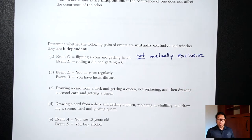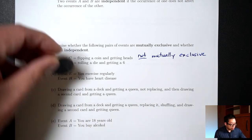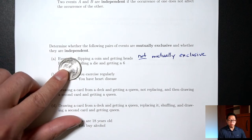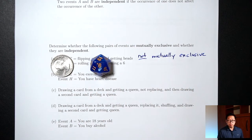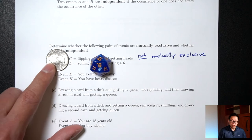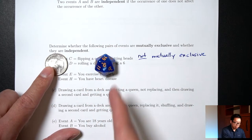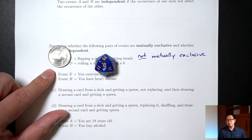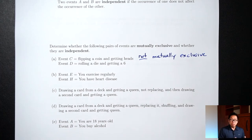The second question: are these two things independent? Does getting heads on a coin affect whether or not you get a six on a die? No, it does not. Getting heads on a coin doesn't affect whether you're going to get a six on a die at all — the die doesn't care what happens with the coin, whether it's heads or tails. Because they don't affect each other at all, this would be independent.